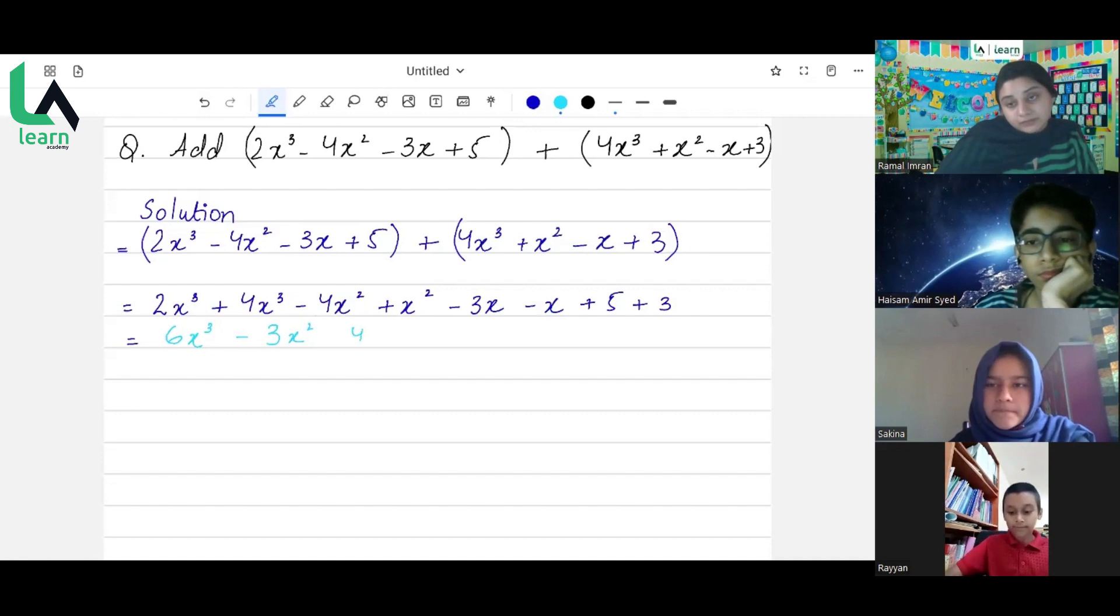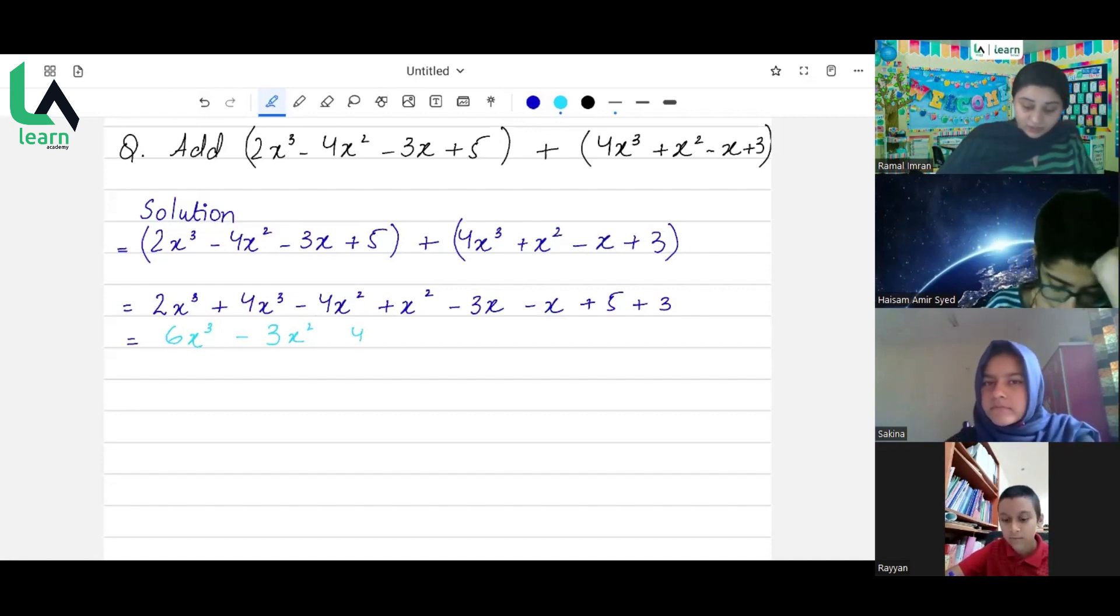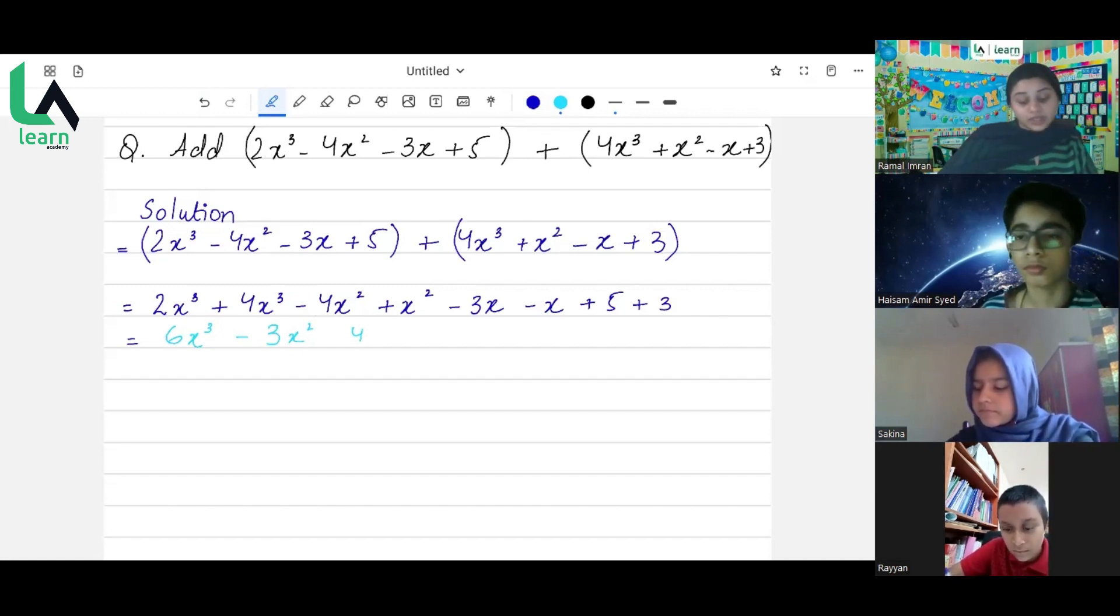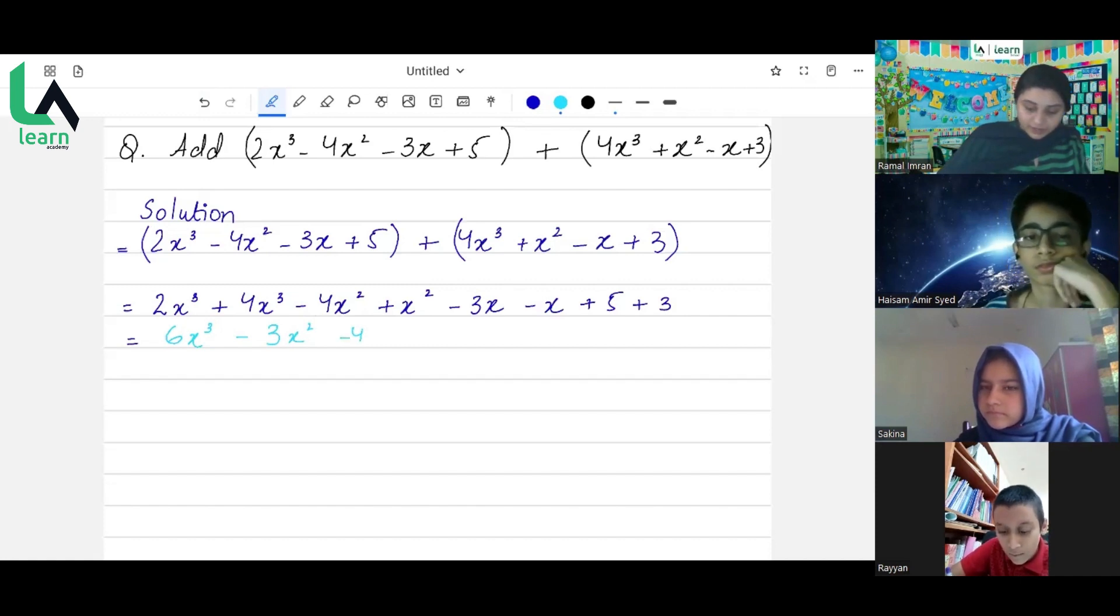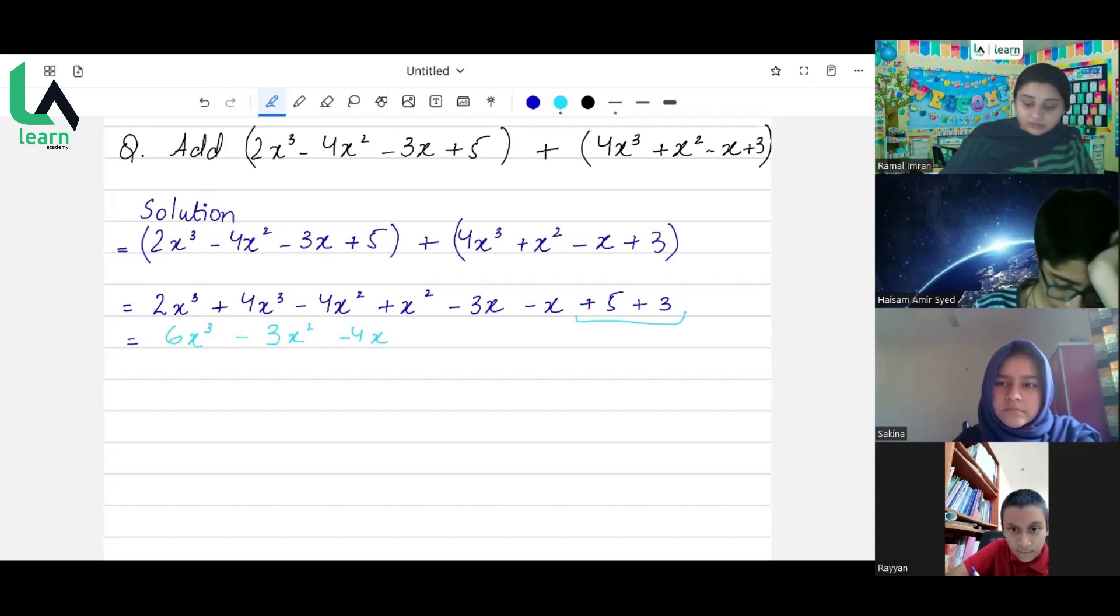Now what is the sign? The sign will be same as the question because it says when we have same sign, we have like signs, so the sign will be there from the question. So it will be minus 4x. Do not forget to write x because it's the variable with the coefficient. Now heading towards the last pair of numbers, that is plus 5 and plus 3, that is a simple calculation. So it will be plus 8.